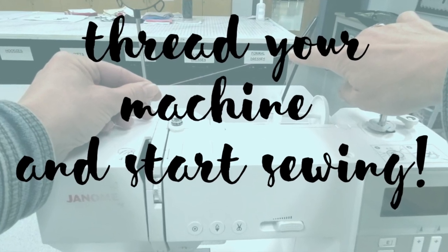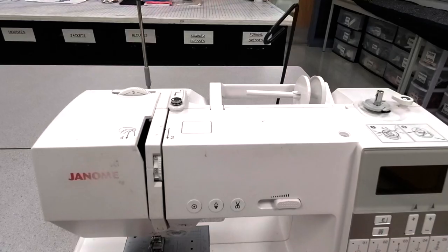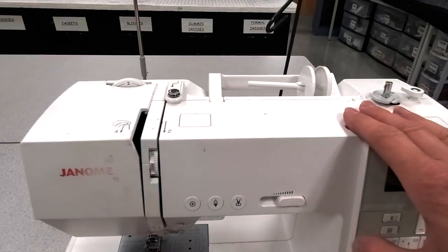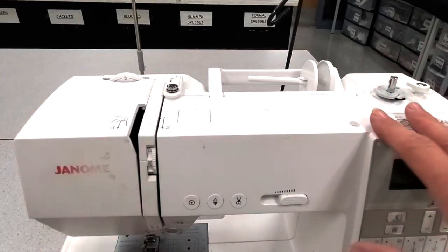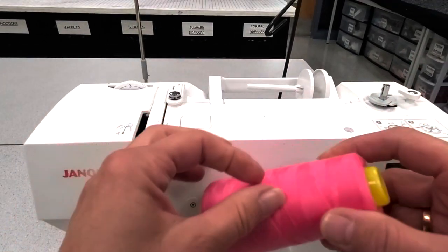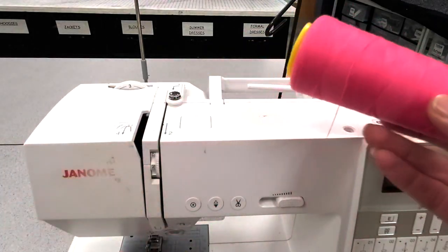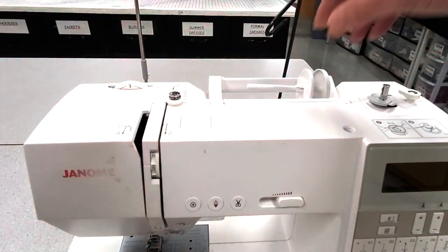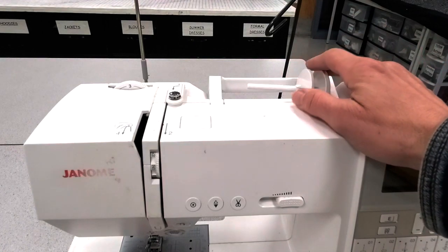This video is going to show you how to thread the Janome DC 6030 machine. Most machines follow a very similar path. In our classroom we use these big cones of thread because it's the most economical way to buy thread, and it does not go on this spool holder.